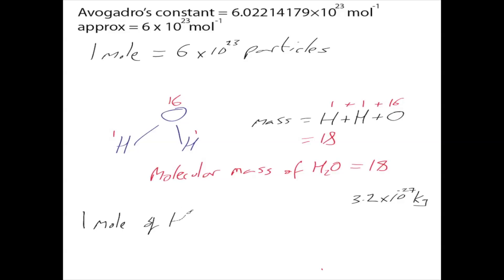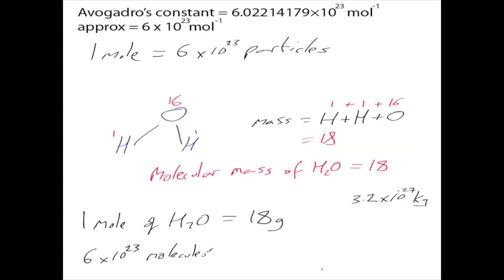One mole of H₂O equals 18 grams, because one mole equals 6 times 10 to the 23 particles. So 6 times 10 to the 23 molecules of water equals 18 grams.